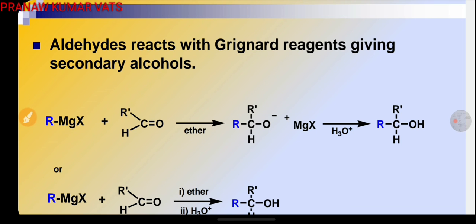Example: RMgX when reacts with aldehyde other than formaldehyde, the general formula is RCOH in presence of ether, then there will be formation of intermediate RCR'OMgX, which on treatment with H3O+ gives RCR'OH. Two degree alcohol is produced.